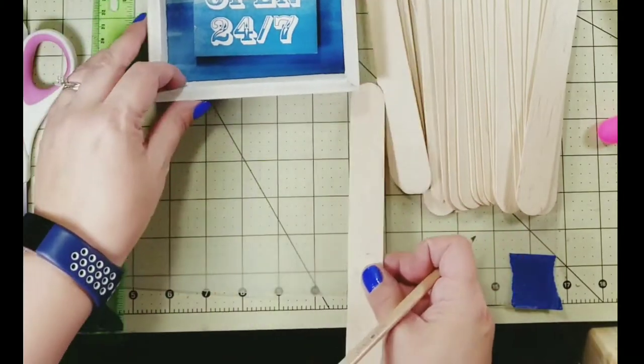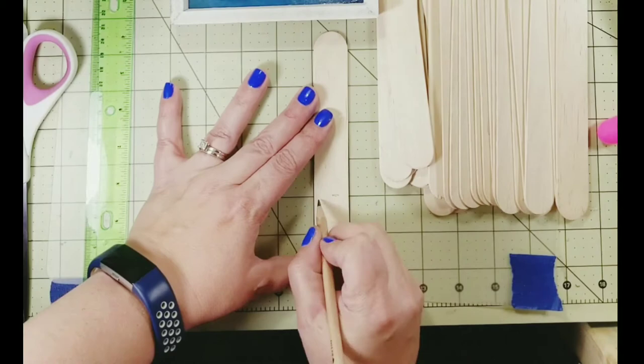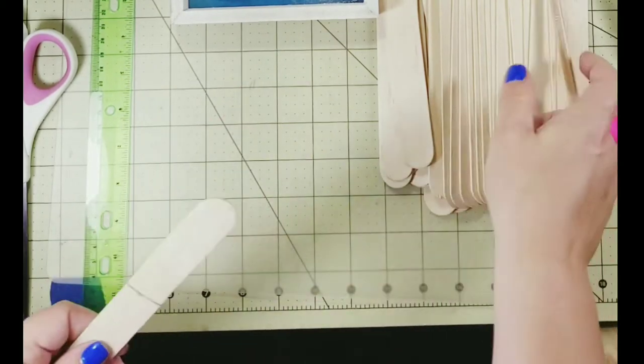First we're going to start with this planter that looks like a picket fence. To begin I started off with jumbo craft sticks. I picked mine up from Walmart but you can get them from pretty much any craft store.